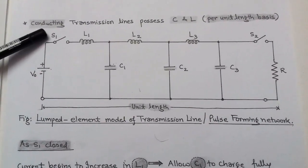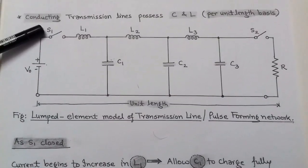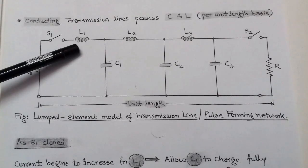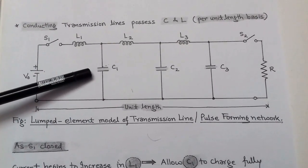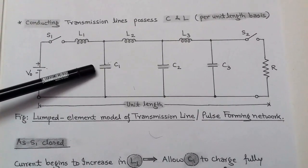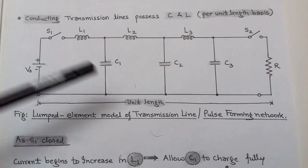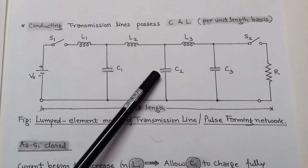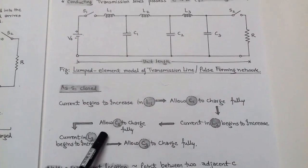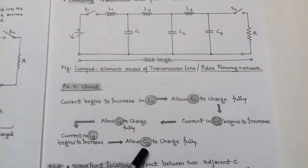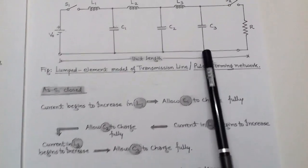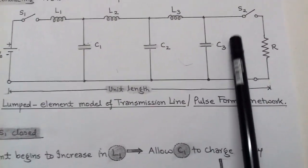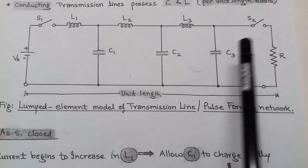Initially, as switch S1 is closed, the incident current begins to increase in inductor L1. This inductor L1 allows capacitor C1 to charge fully to voltage V0. The charged capacitor C1 then starts increasing the current in inductor L2, which further allows capacitor C2 to charge fully, and one by one capacitor C3 also charges fully. Since switch S2 is open, the transmission line charges fully in this manner.